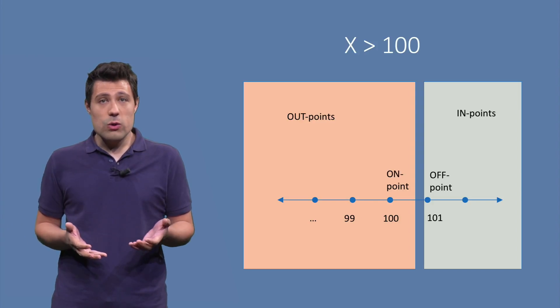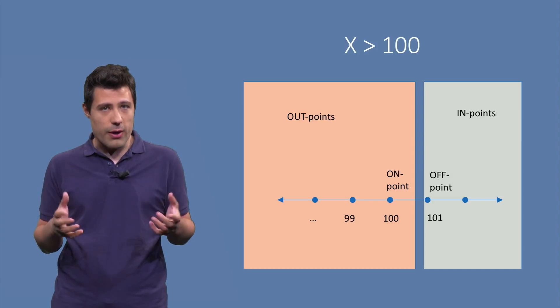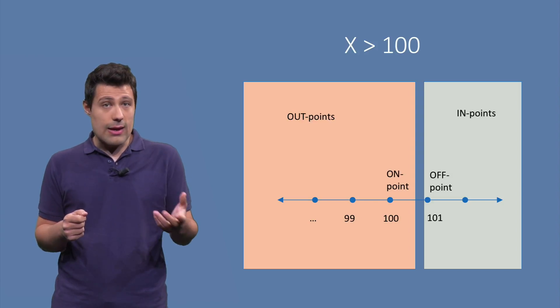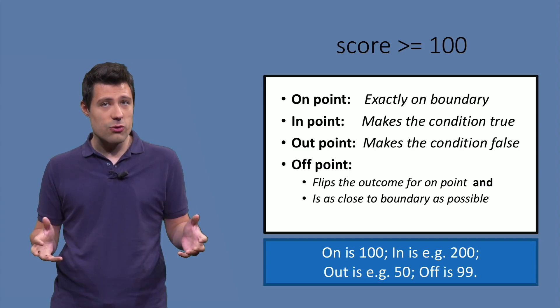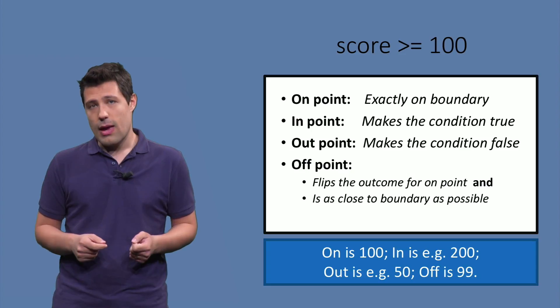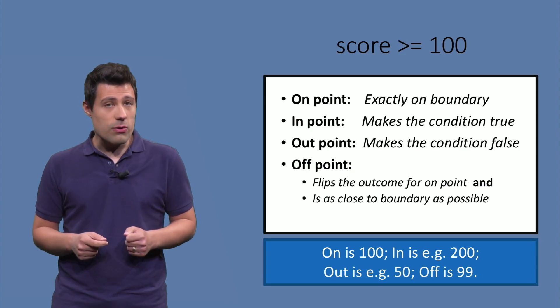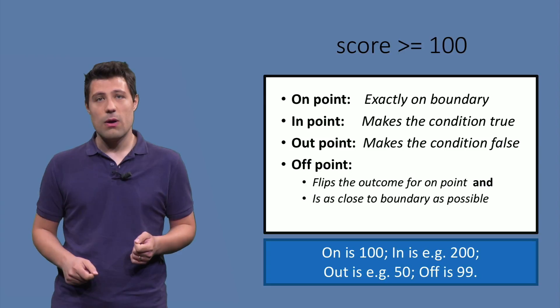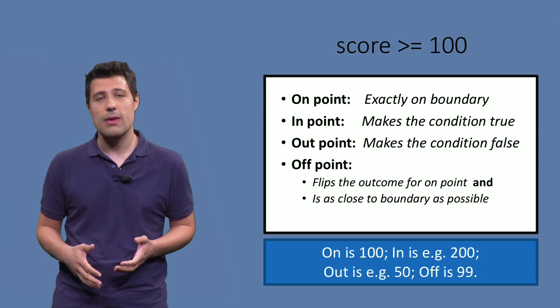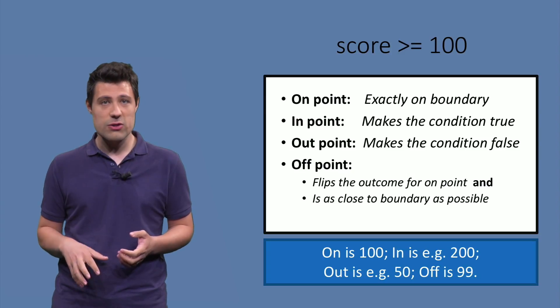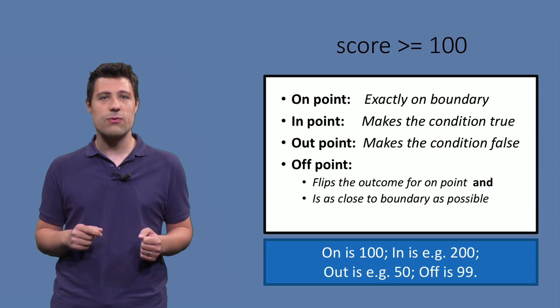So what we do when it comes to boundary analysis is to think about these four points. The on point is the exact point on the boundary, in points make the condition true, and there might be many of them. The out points make the condition false, and the off point is the one that flips the outcome for the on point and is as close to the boundary as possible. Your task as a software tester is to make sure that your system behaves correctly in these four cases.